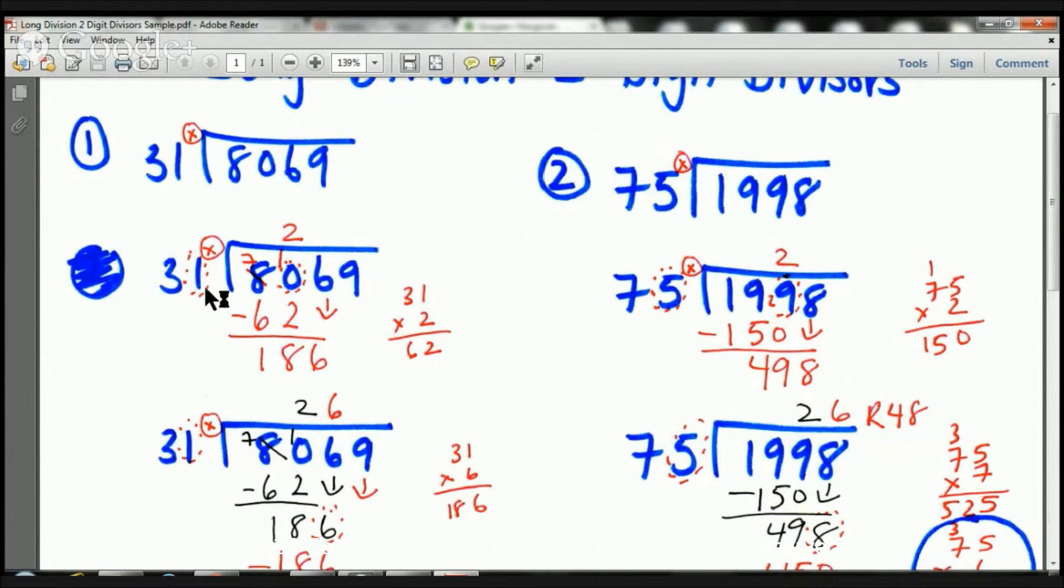So I've got 31 into 8. Can 31 go into 8? No, so I'm going to move on. Can 31 go into 80? Yes, it can. How many times? Exactly. We need to figure that out. So this is what I do. This is a little trick that I do. I just, for a second, I cover up this one right here. I cover up the 0 right here. And then now I have 3 into 8. Can you do that? Yeah, right? How many times can 3 go into 8? Well, I know that 3 times 2 is 6, and 3 times 3 is 9. So it's not going to be 3. It's going to be 2.